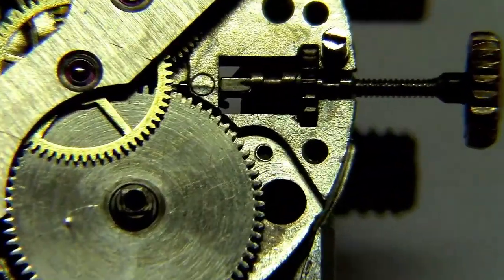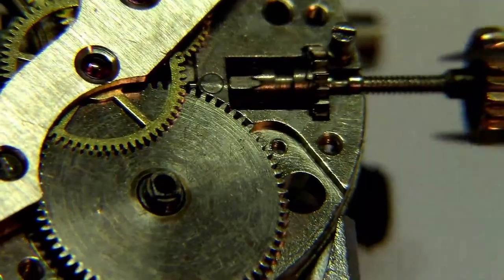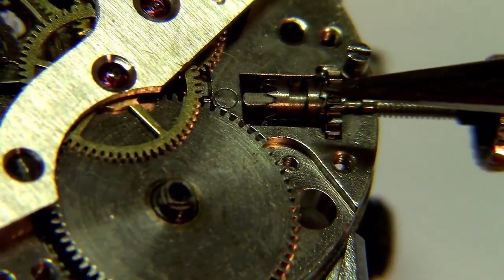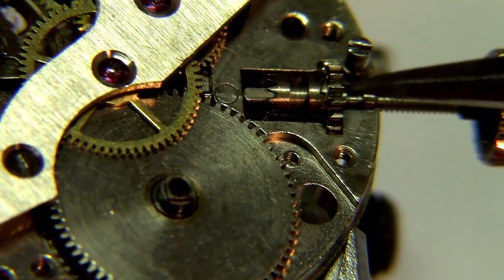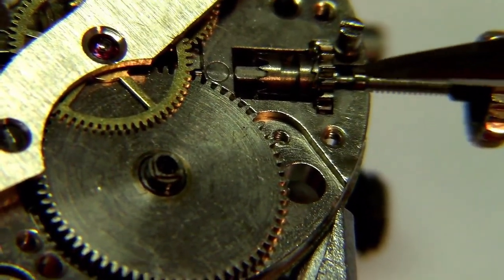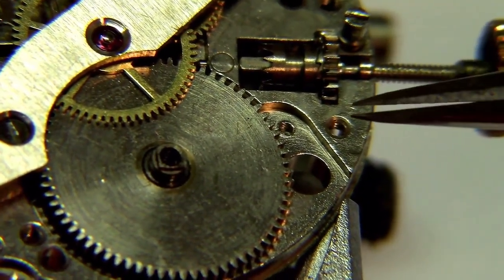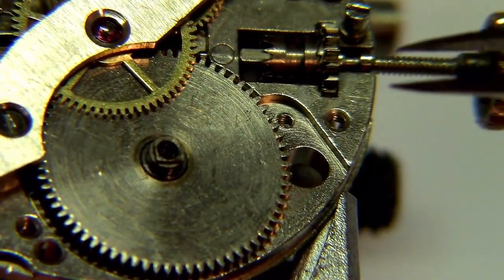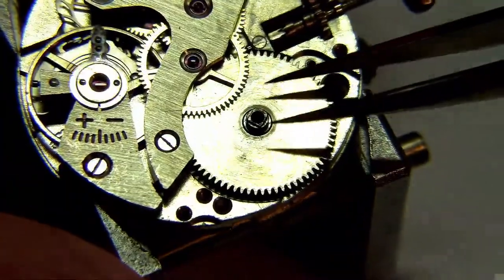We have part of the keyless system, which acts like a clutch that is responsible for changing from the winding function to the hour setting function. This is what we'll see in the next part of this video.